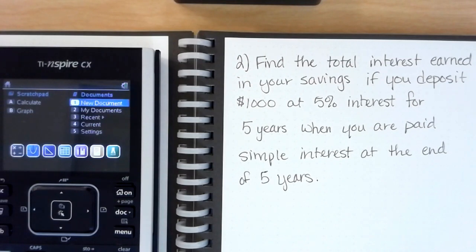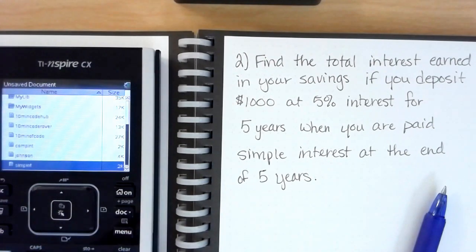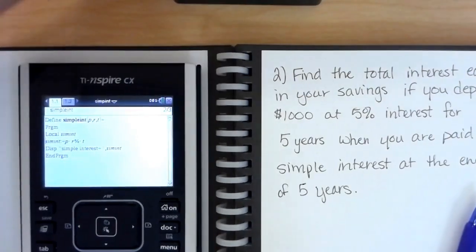Okay, so next we're going to look at a simple interest problem. Again you'll want to go back to your My Documents. We have created a simple interest program so we'll need to select that.